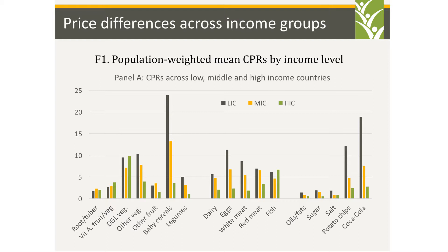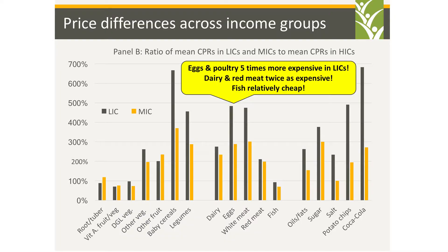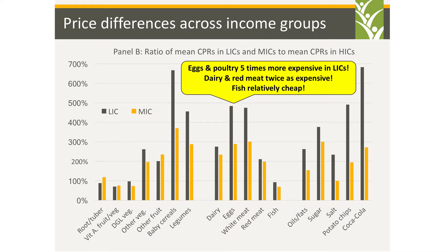The main message: eggs and poultry are five times more expensive in low-income countries than in high-income countries. In the US, you can buy a dozen eggs for $2.20 — phenomenally cheap — while a loaf of bread costs $3 to $5. Whereas in poor countries, eggs are really expensive relative to cereals. In most cases, healthy foods and some unhealthy foods are more expensive in low- and middle-income countries, with some exceptions like dark green leafy vegetables.